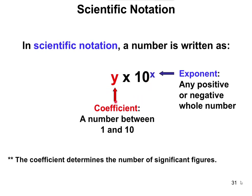The y part is going to be a coefficient, and that's going to be a number between 1 and 10. More exactly, the number is going to be greater than or equal to 1 and less than 10 — it can be exactly 1, it could be like 9.9999, but it has to be less than 10. Then times 10 to the x, where x is any positive or negative whole number, so there's going to be no decimal points in that exponent.